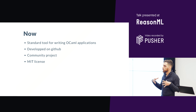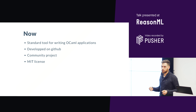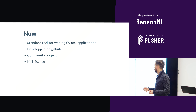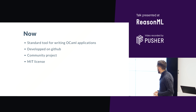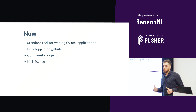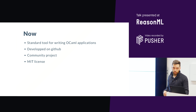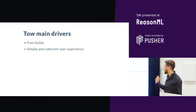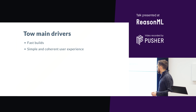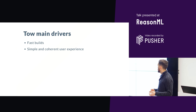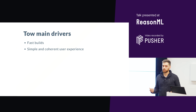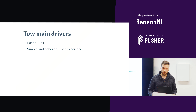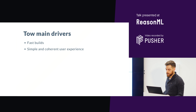Today Dune is the standard tool for writing OCaml applications. It has really become a community project with a lot of people getting involved. It is entirely developed on GitHub and uses the MIT license. The two main drivers of the project are: a really fast build, and a very simple and coherent user experience.